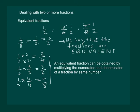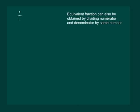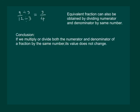Hence, we state that an equivalent fraction can be obtained by multiplying the numerator and denominator of a fraction by the same number. Now consider another fraction, say 9 by 12. If we are required to find an equivalent fraction, we can either multiply or divide to find an equivalent fraction. Dividing gives us 3 by 4. So we can say that an equivalent fraction can also be obtained by dividing the numerator and denominator by the same number. We thus conclude that if we multiply or divide both the numerator and denominator of a fraction by the same number, its value does not change.